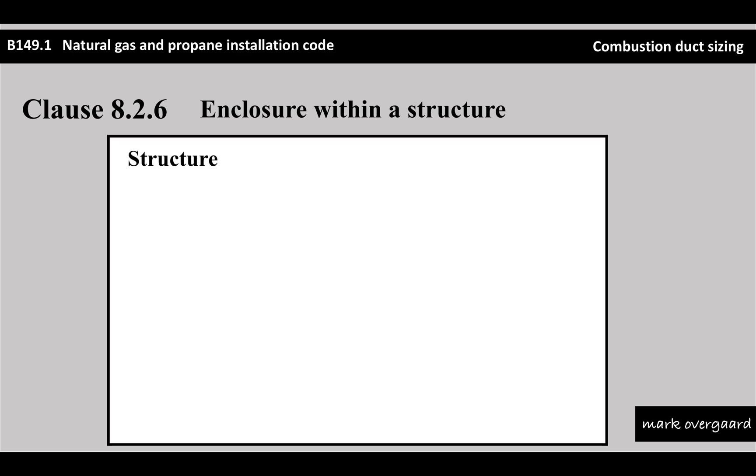So we're starting with a structure - think of something like a warehouse. This particular clause only works with this scenario: we have to have a low-volume installation, meaning the combined inputs of all the appliances within the enclosure have to be less than 400,000 BTUs.